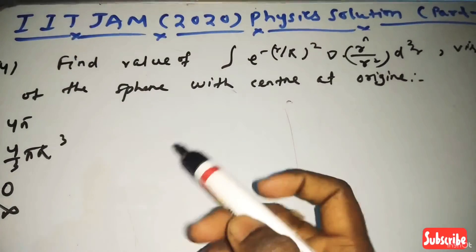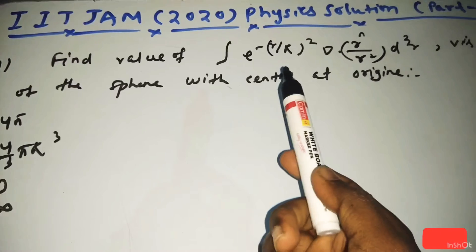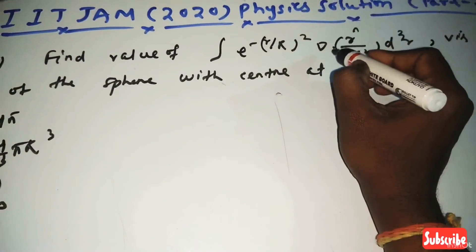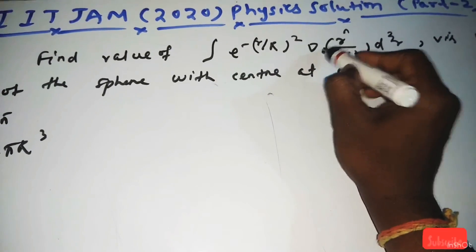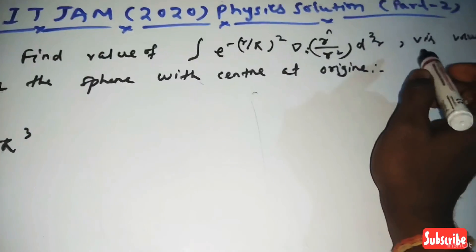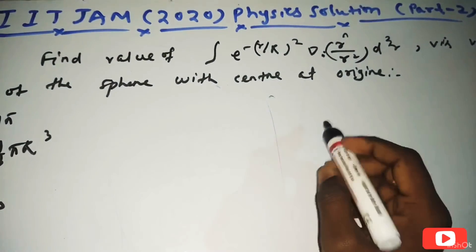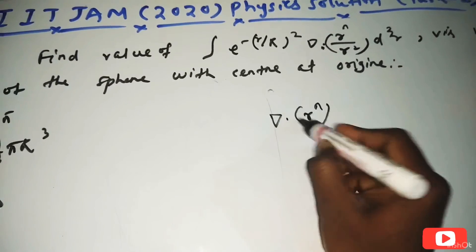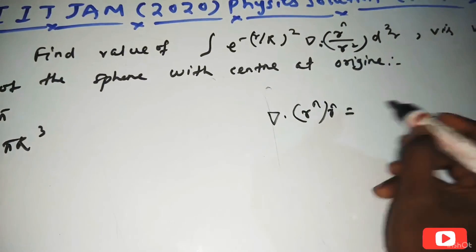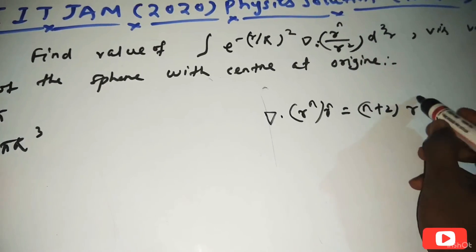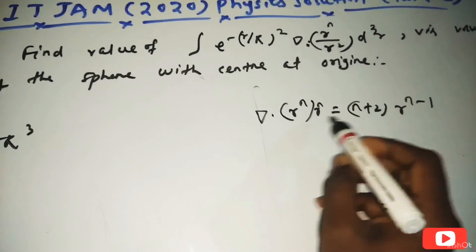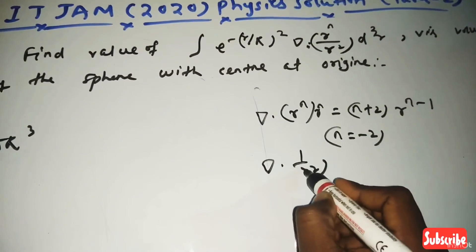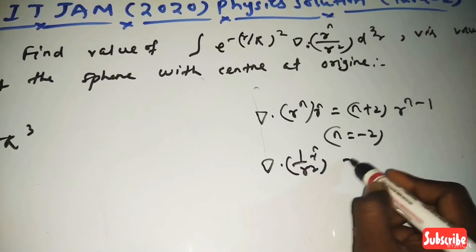The next question: find the value of the integral ∫ e^(−r/r₀) (∇ · r̂/r²) dV over a volume containing the origin. We know that the divergence of r^n r̂ equals (n+2) r^(n−1). For the case of 1/r² (i.e., n = −2), the divergence gives 4π δ³(r).